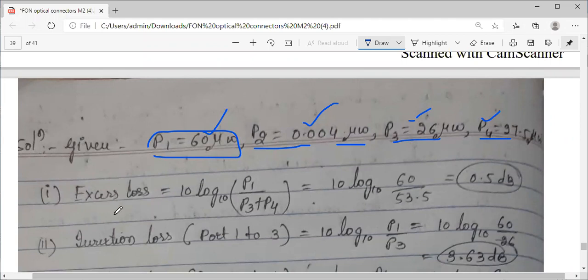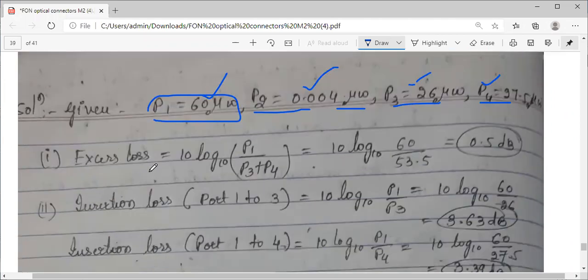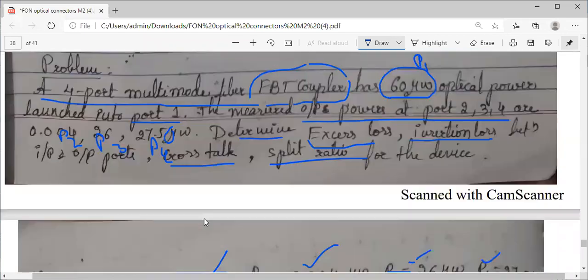First, access loss formula: 10 log base 10 P1 divided by P3 plus P4. P1, P3, P4 data is given, all powers are in microwatts. Take numerator and denominator: 60 and 26 plus 27.5 equals 53.5, you will get it in decibels.